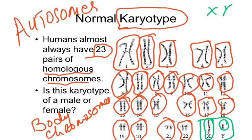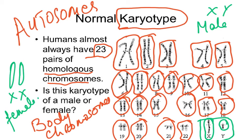If the 23rd pair is XY, with the Y being shorter than the X, this will be a male human being. If both are the same size — XX — a female will develop. The 23rd pair is a little odd because sometimes the two chromosomes are not the same length.